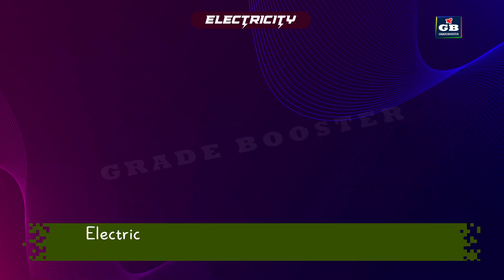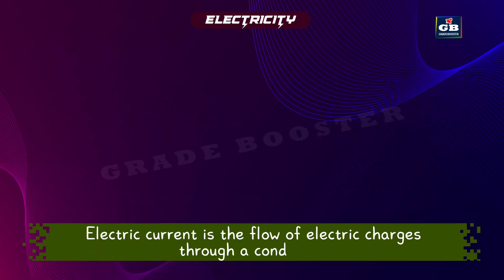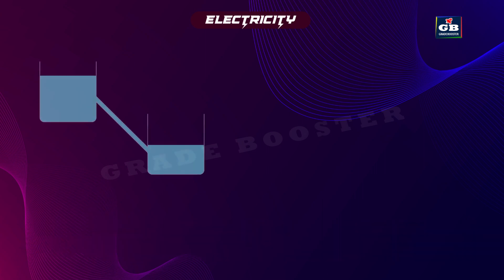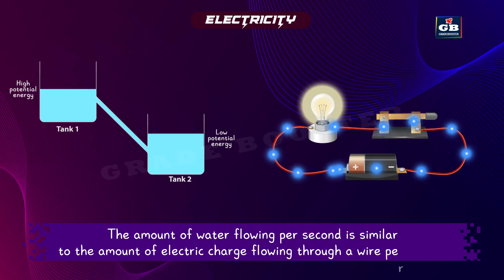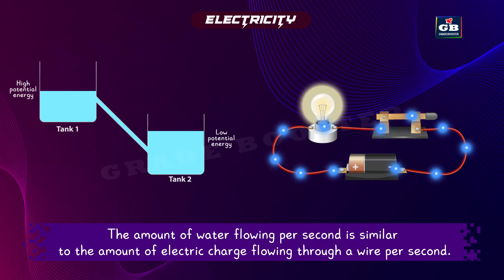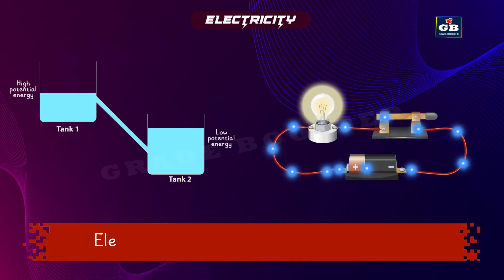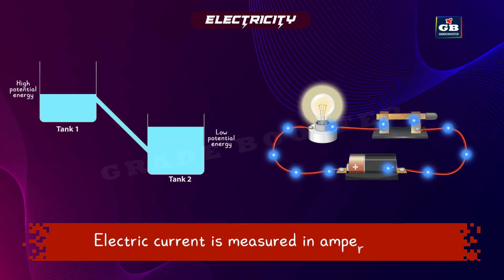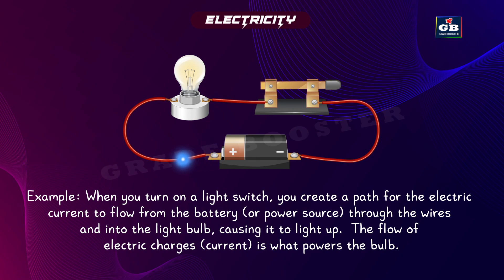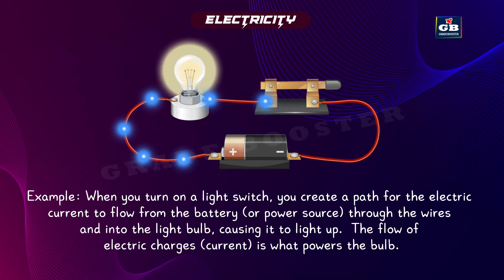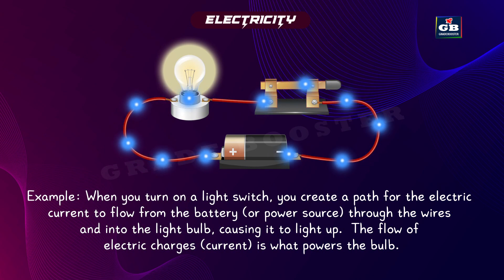Electric current is the flow of electric charges through a conductor. If we go back to our water tank example, electric current is like the flow of water through a pipe. The amount of water flowing per second is similar to the amount of electric charge flowing through a wire per second. Electric current is measured in amperes. For example, when you turn on a light switch, you create a path for the electric current to flow from the battery through the wires and into the light bulb, causing it to light up. The flow of electric charges — that is, the current — powers the bulb.